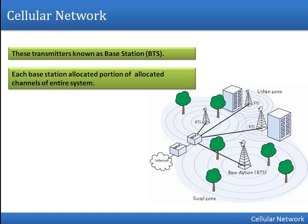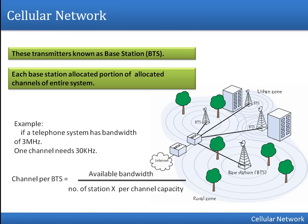Now if we have some total frequency T and we have four base stations, every base station will get T/4 frequency. To find out how many channels we have per cell: first find the portion of frequency allocated for one cell using the formula — available bandwidth divided by number of stations — which gives the frequency allocated per cell. Then divide that by the frequency required per channel to get the number of channels per cell.